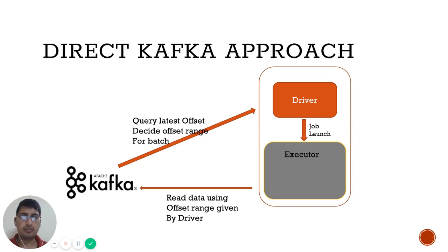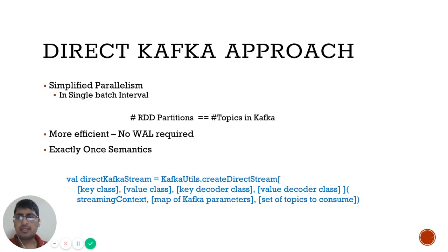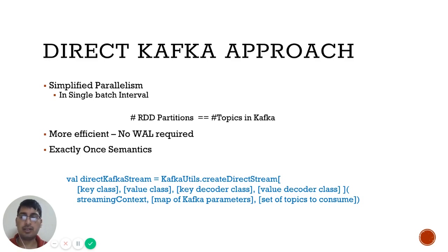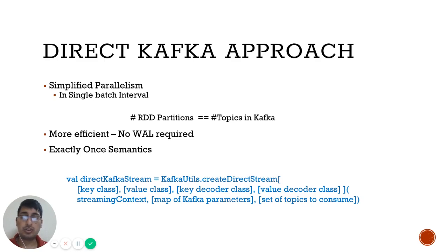Let's look at the benefits of direct Kafka. First, parallelism is simplified. In the receiver-based approach, we had to create multiple receiver streams to increase parallelism and then do a union before processing — that was extra overhead. In the direct Kafka approach, Spark handles this for us. The number of partitions our RDD will have equals the number of topic partitions in Kafka, so partition creation and management are abstracted from us.